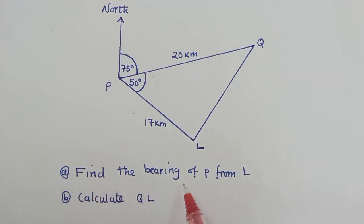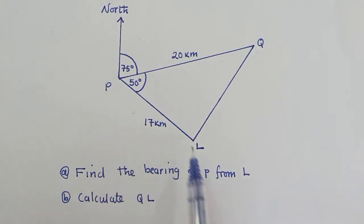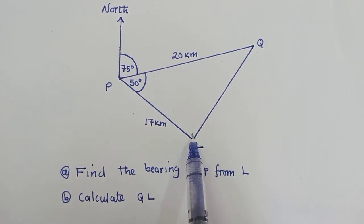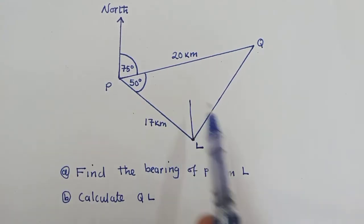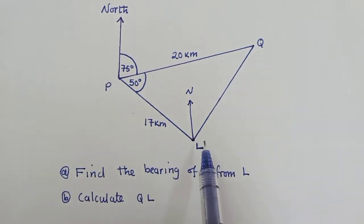So I've been asked to find the bearing of P from L. So where is P? P is right here. L is here. So what do you do? You go to where it says from, so from L, and make your north line like that. So this is our north line. That's the first thing.